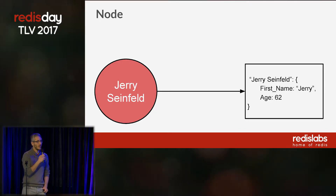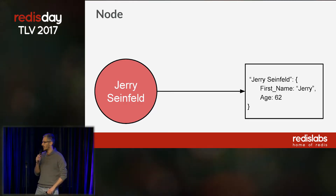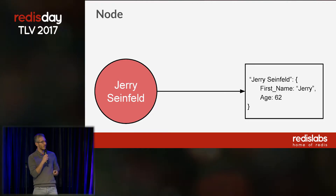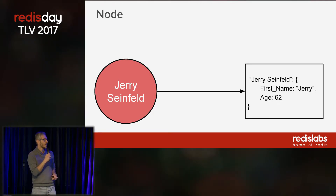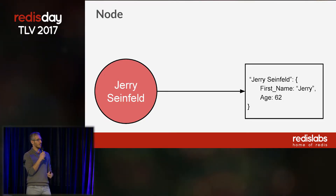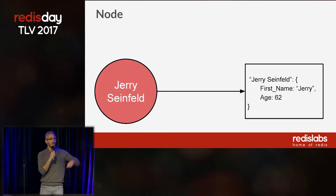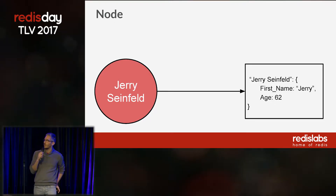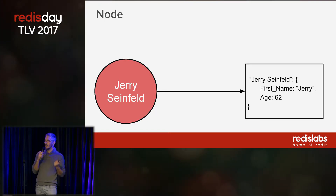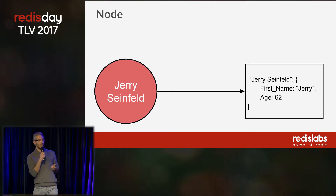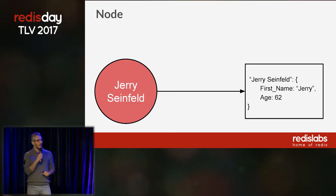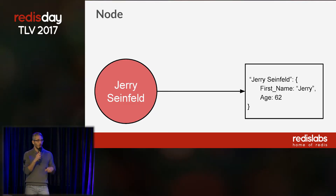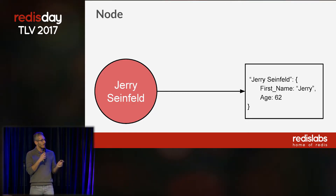I would like to talk a little bit about the basic concepts of graphs within my Redis module. The most basic entity we have is the node. In RedisGraph, a node is simply a reference to a Redis hash. For instance, we can have this node right here which represents Jerry Seinfeld, basically pointing to a Redis hash with some properties describing Jerry. One reason to go with such a simplistic model is that if you are already using Redis and your data is already in there, there's no need to reintroduce your data.